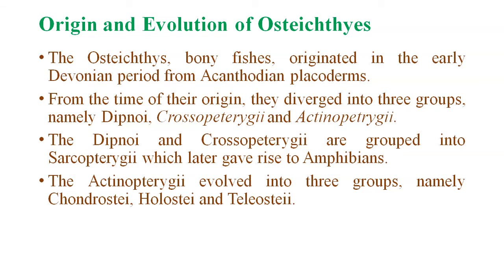When we discuss the origin and evolution of Osteichthyes, this was the first phase. The Osteichthyes originated in the early Devonian period from acanthodian placoderms. From the time of their origin, they diverged into three groups: Dipnoi, Crossopterygii, and Actinopterygii. The Dipnoi and Crossopterygii are grouped into Sarcopterygii, which later gave rise to amphibians.